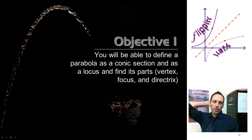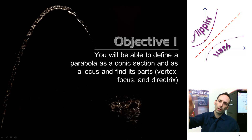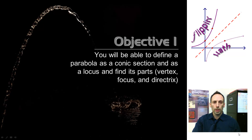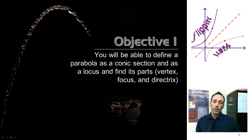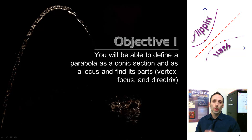We're back with objective 1, and we have our image of a parabola. We're talking about being able to define this thing as a conic section, which we already did. We know that if we take a cone, a double cone, and we slice it parallel to one of its lateral edges, we make a parabola.